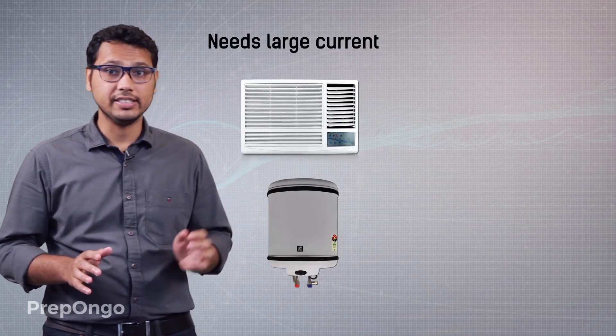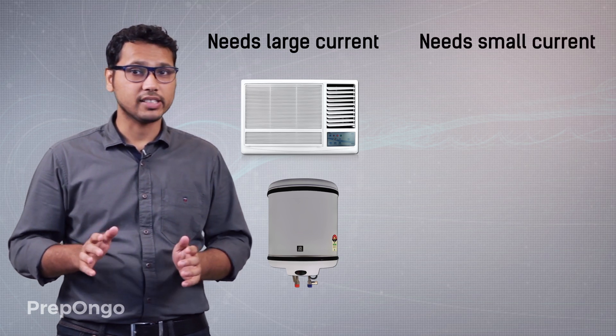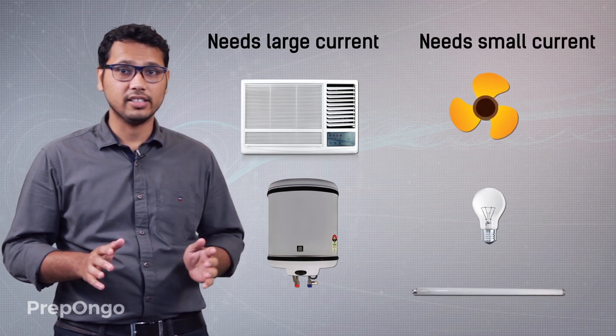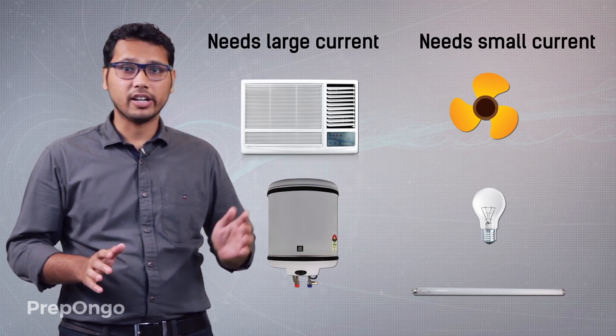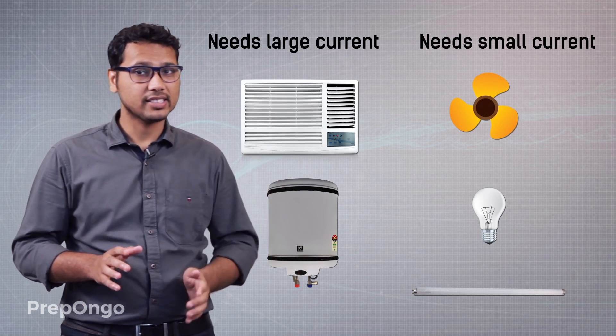Now we know that electricity is produced in very big generators in the power plant and then it travels to our homes by thousands of kilometers long transmission lines. So let's see how it is being distributed in our homes after it comes to our main meter. We have two different types of appliances. One which needs a lot of current like the air conditioner or the geyser. Then we have some small appliances like the fan, bulb or tube light which need small current.